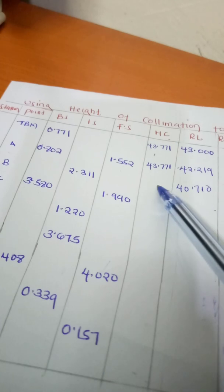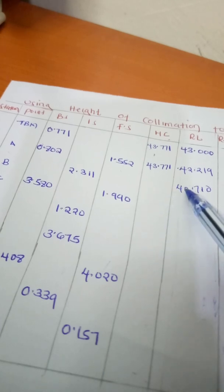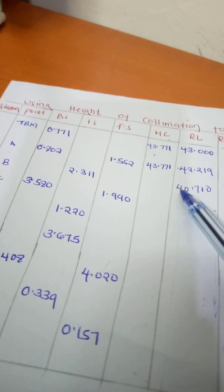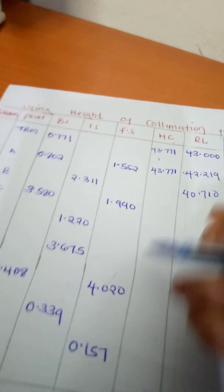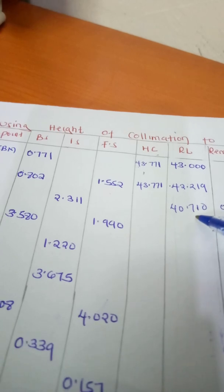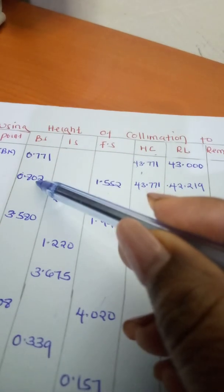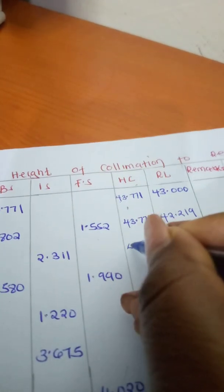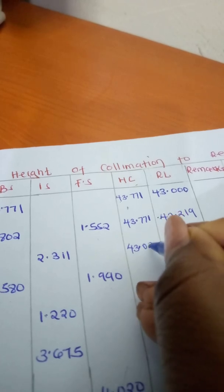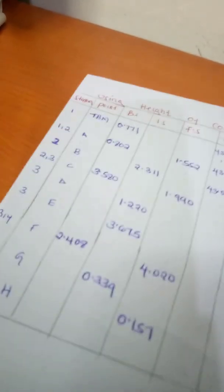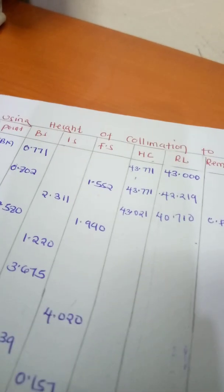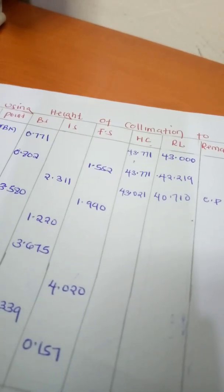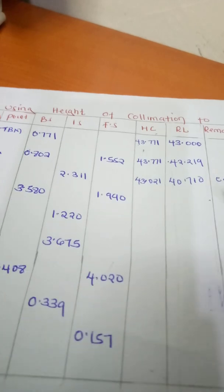Now we find the new height of collimation, which is the reduced level plus the backsight. Our reduced level is 40.710 and our backsight is 0.802, so we add them to get the new height of collimation: 43.021.